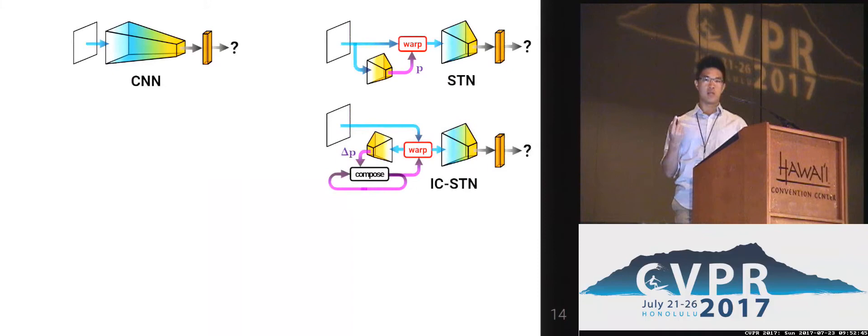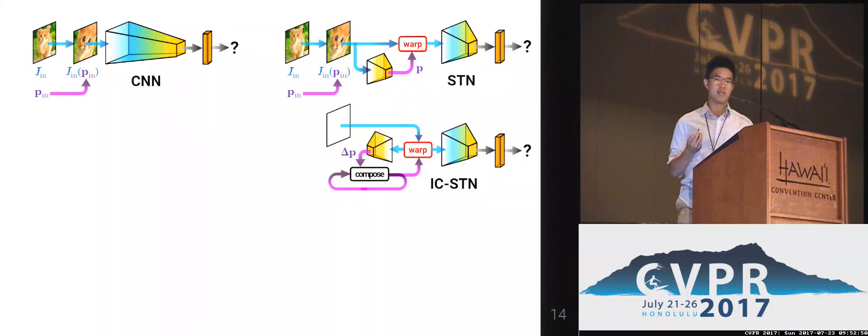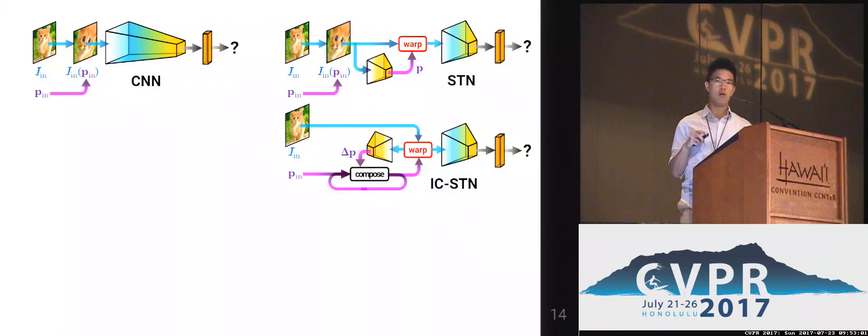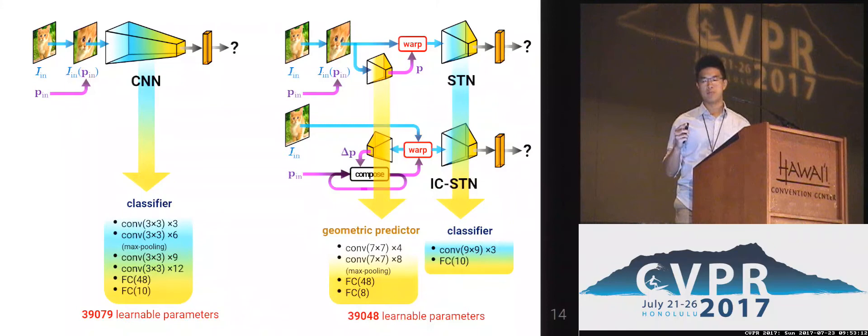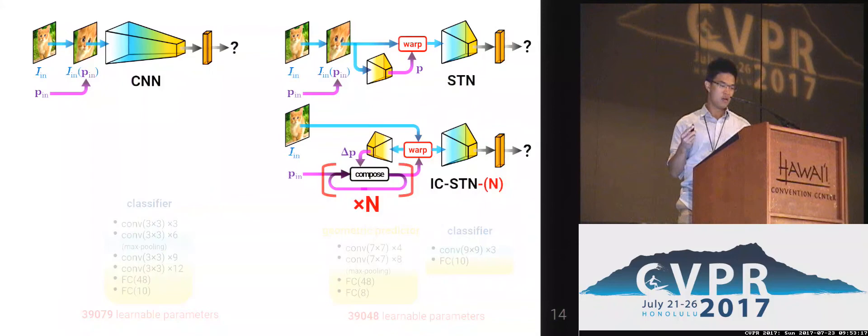In our experiments, we compare against three kinds of architectures: a baseline CNN, an STN, and our ICSTN. For CNN and STN, we perturb the images and crop the region of interest to fit inside the networks. Whereas in ICSTN, we always keep the original image and compose the geometric updates. We designed the baseline CNN, STN, and ICSTN to have roughly the same number of layers and learnable parameters. We also denote the suffix for ICSTN as the number of recurrent transformations that are learned.